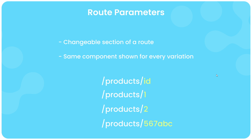This id is known as a route parameter because it's the part of the route that changes. For each of those different changeable id values we still want to show the same product details page component and the same template, but we'd also want to fill that component template with the product associated with whatever the id is in the URL. Using React Router we can access that route parameter both in components using a special React hook and also in loader functions with a parameter that React Router automatically gives to us.